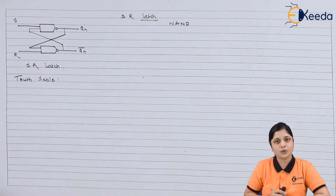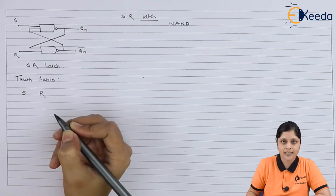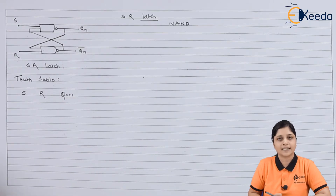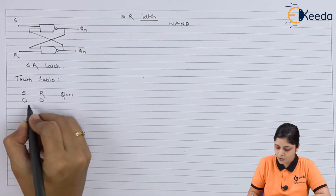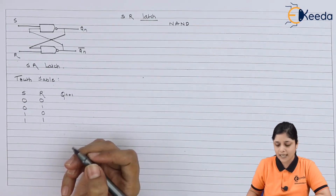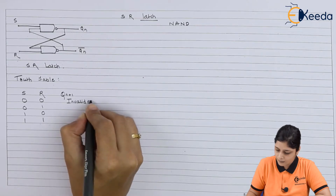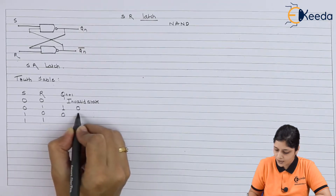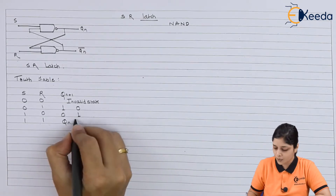Now we will see the truth table for SR Latch. It consists of inputs S and R, and at the output we write Qn+1 — that is the next state notation. With two inputs there are four combinations: 00, 01, 10, and 11. For 00 it is an invalid state. For 01 we get output 1,0; for 10 we get 0,1; and for 11 we get Qn — which is the memory.